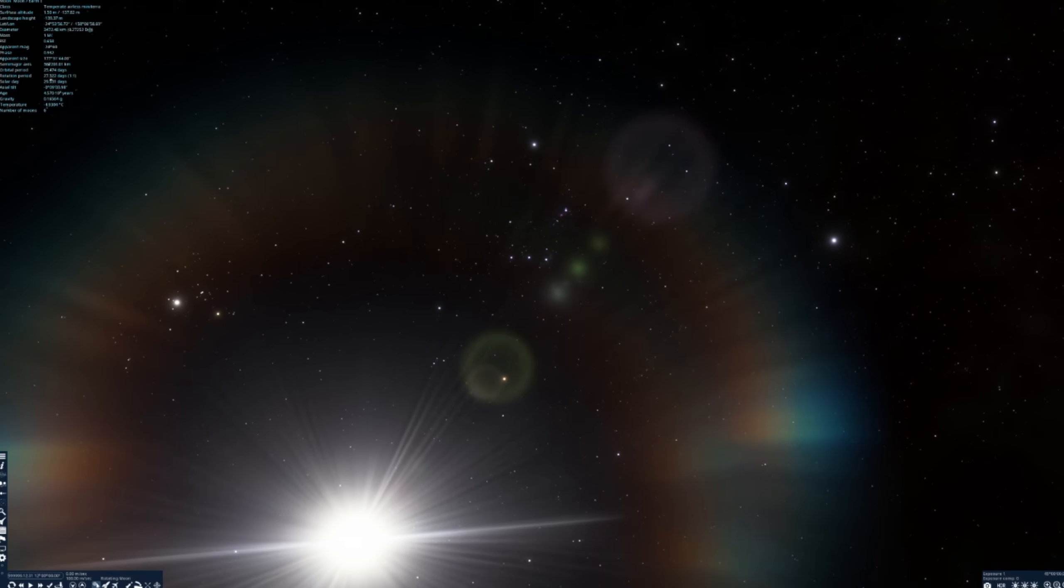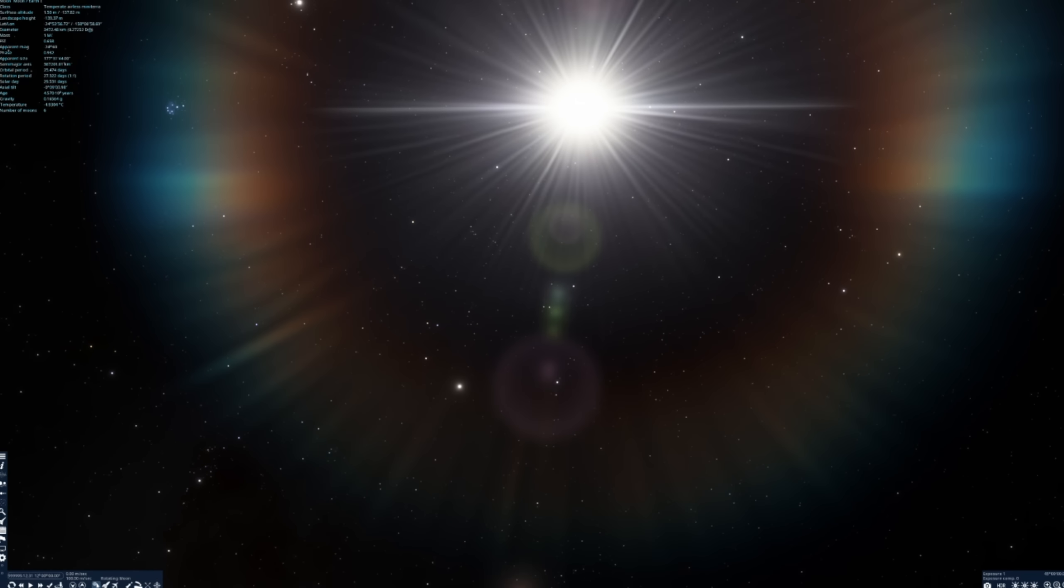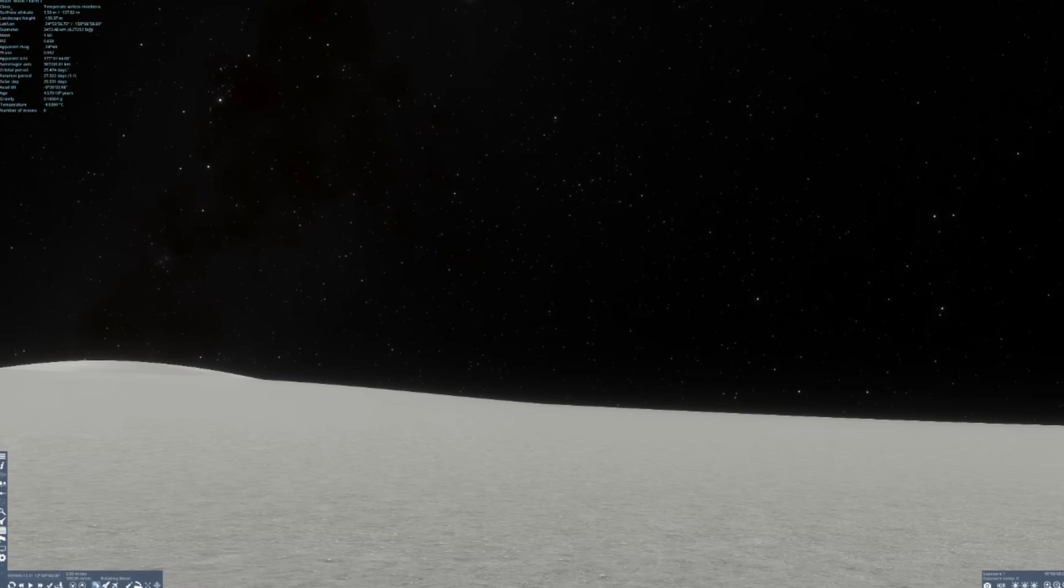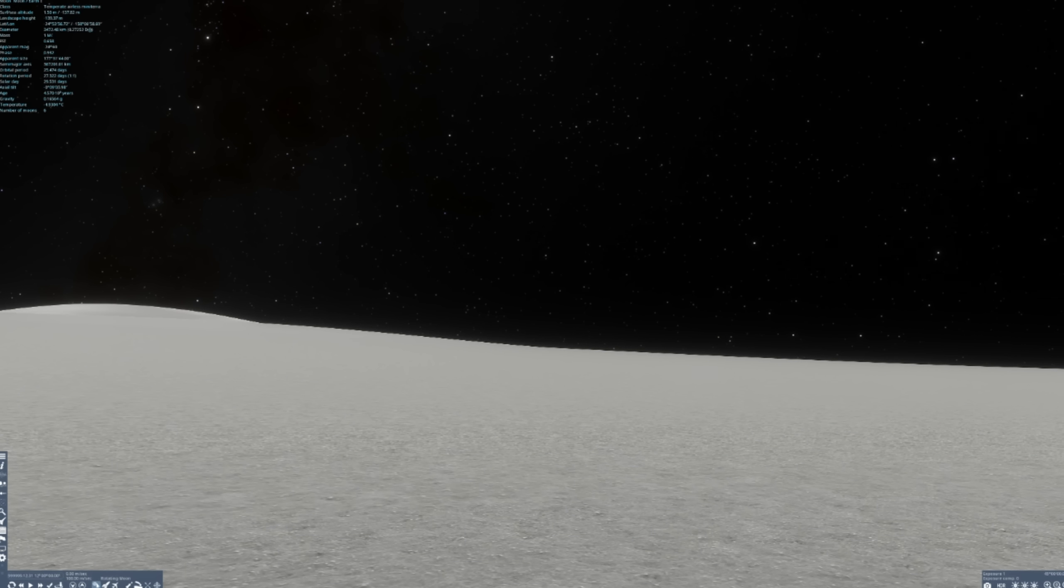So that means if you're in space where there is no atmosphere and you look at the Sun, the Sun will not look yellowish anymore but it'll just look like a white star.